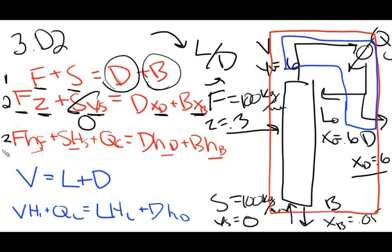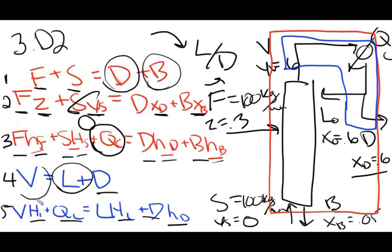Looking at the third equation (overall energy balance), we know F, S, D, and B, and we're going to be able to find all the enthalpy terms using an enthalpy composition diagram. So Q_C is our only unknown, and we can solve for it. Then looking at the condenser equations, we have two unknowns — L and V — and two equations, so we can solve for both. With L and D known, we can find L over D, which is what the problem asks for.